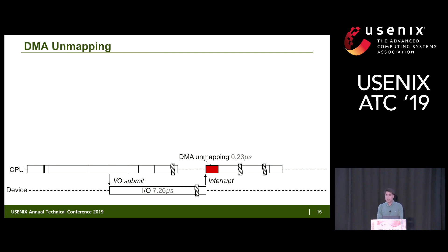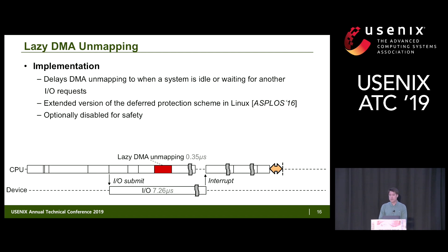The last target in the read path is DMA unmapping, which is performed in the interrupt handler after device I/O finishes. In our scheme, we delay DMA unmapping to when the system is idle or waiting for another I/O request. This is an extended version of the deferred protection scheme in Linux, which delays unmapping DMA addresses to avoid I/O MMU operation overhead. Because this is related to system security, we offer an option to disable this feature.